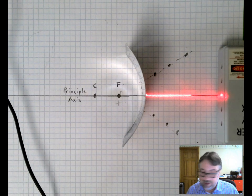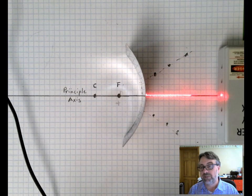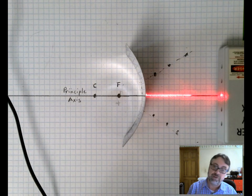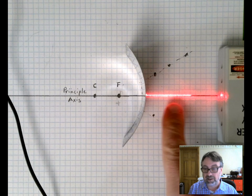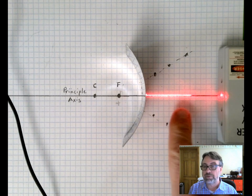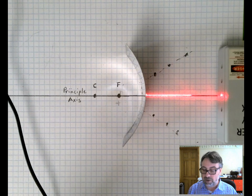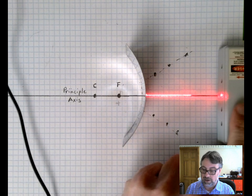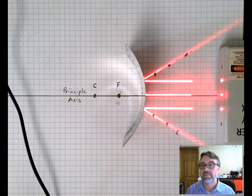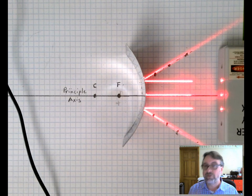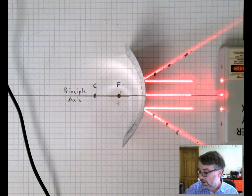Now I'm reflecting the light off the mirror where the mirror is curving away from the source. You'll still see that I still have the light ray bouncing straight back through the principal axis. But watch what happens when I turn on the additional rays. And you'll see now that the light rays are diverging.